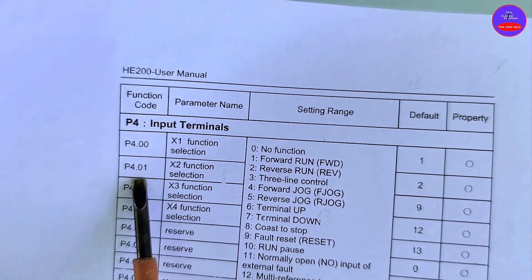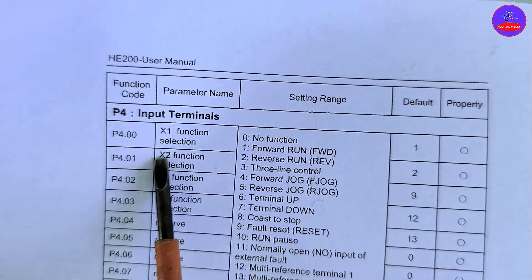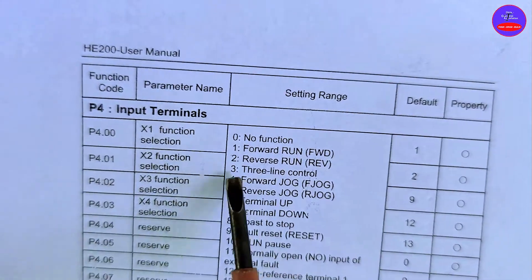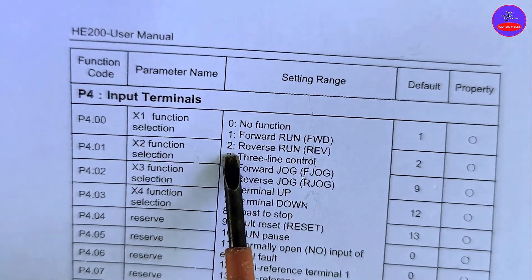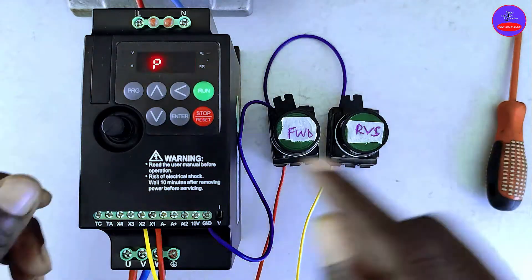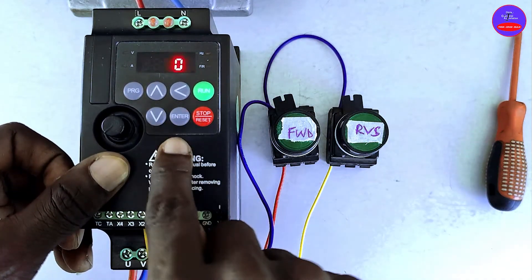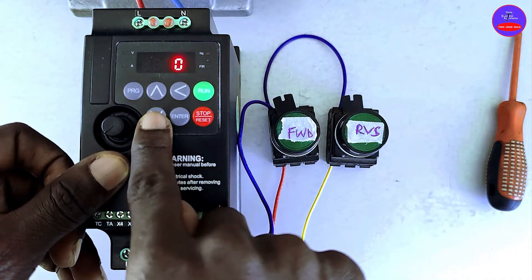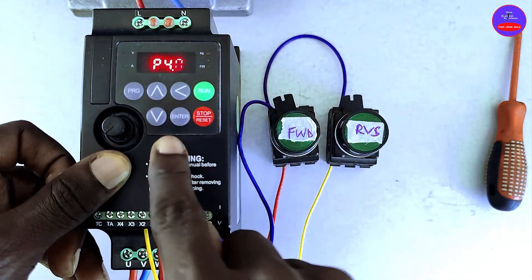P4.01, that is for the X2. You select two. Enter. Two. Enter.